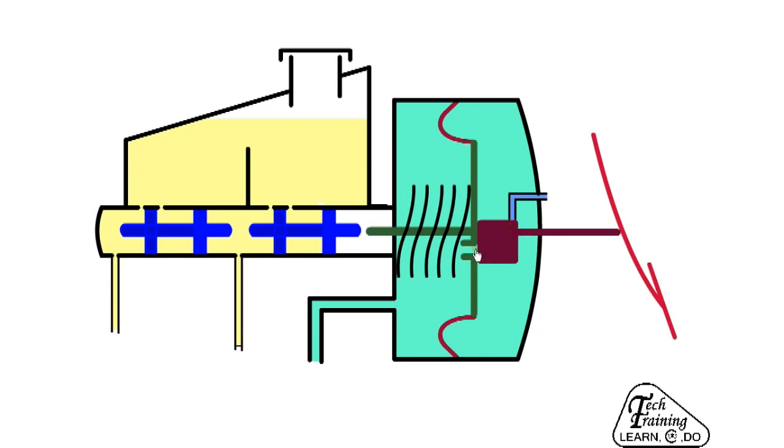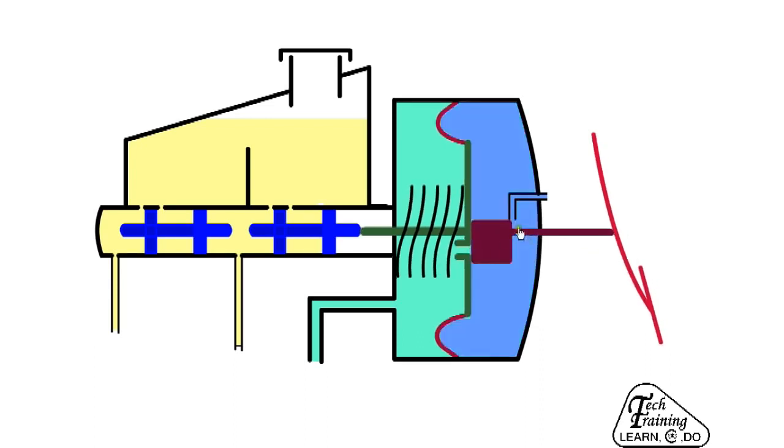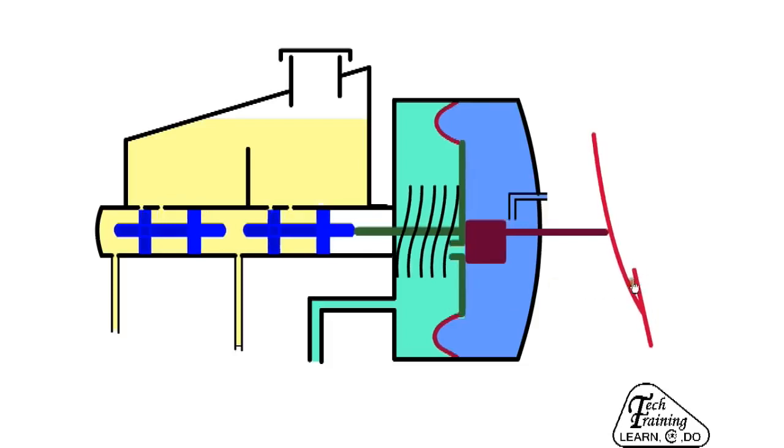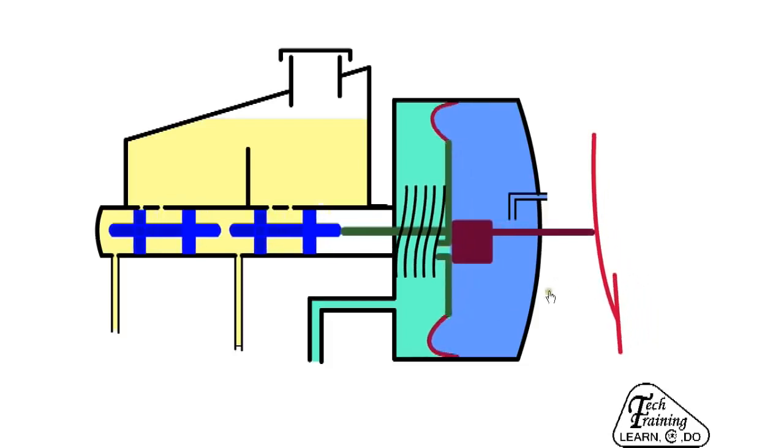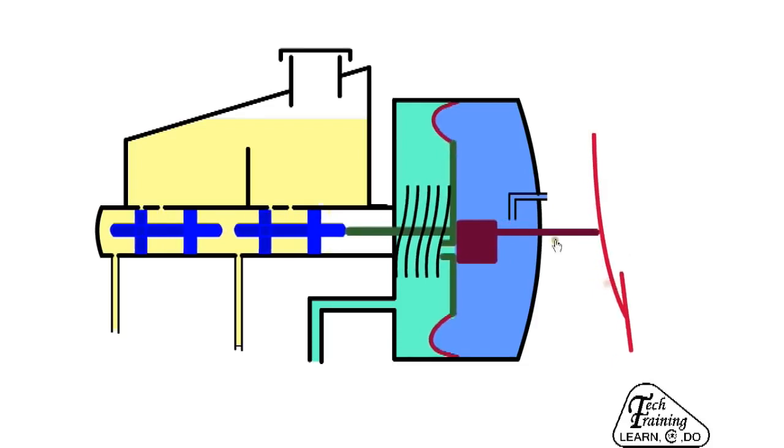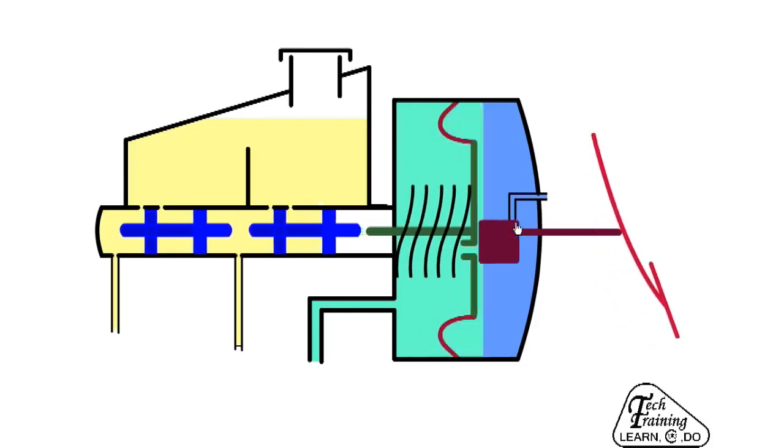When the pedal is pressed, it first closes the valve to the vacuum side and then opens the valve to atmosphere. Now there is a pressure differential across the diaphragm. Vacuum on one side, atmospheric pressure on the other, which assists with application of the brakes. When the brake is released, the valve to atmosphere is closed and the vacuum valve is opened, restoring a vacuum on both sides.